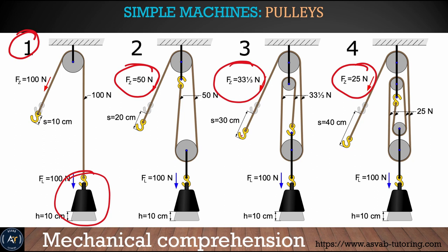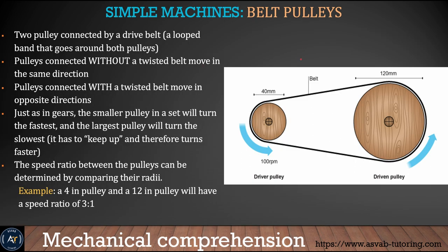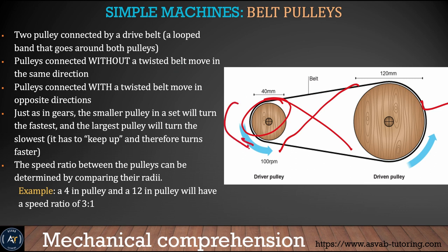The belt pulley works the same as a pulley system. It consists of two pulleys connected by a drive belt. If the pulleys are connected without a twist, the belt moves in the same direction. If connected with a twist, the pulleys will rotate in opposite directions. Next, the mechanical advantage of an inclined plane is the length of the ramp over the height of the ramp.